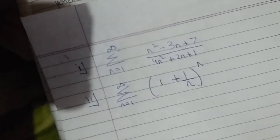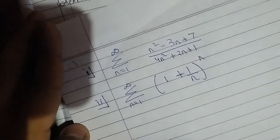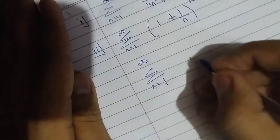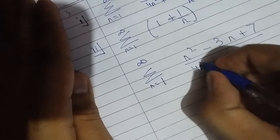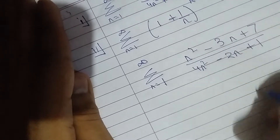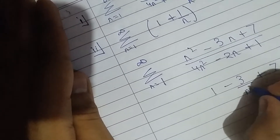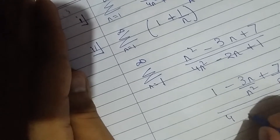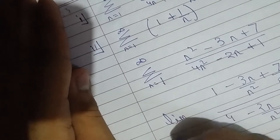Here are some examples for the n-th term test for convergence and divergence. Here is the series, and we are looking at the first example. We divide the numerator and denominator by n squared, and we take the limit as n tends to infinity.